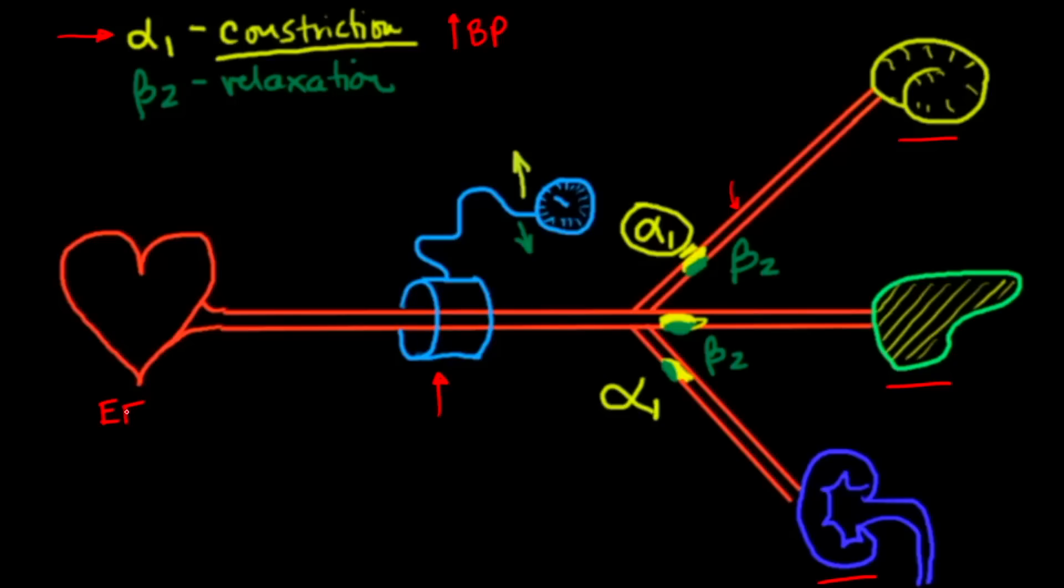The ejection fraction is how much of the blood in the heart at the beginning of contraction is ejected at the end of contraction, and normally it's anywhere between 50 and 60 percent ejection fraction, but sometimes the ejection fraction can be low in congestive heart failure somewhere in the order of 10 to 20 percent or thereabouts.